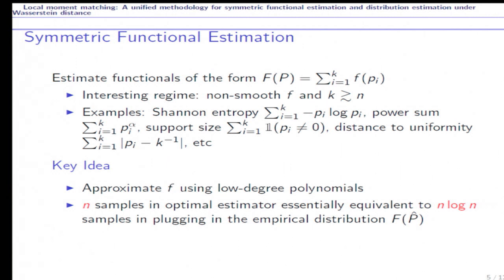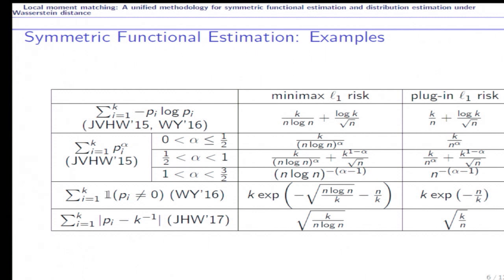Over the recent years, there has been several works working on the minimax optimal estimator in symmetric function estimation. The key ideas are as follows. We need to approximate non-smooth f by some low degree polynomials to reduce the bias. And finally, in most scenarios, n samples in optimal estimator is essentially equivalent to n log n samples in plug-in the empirical distribution.